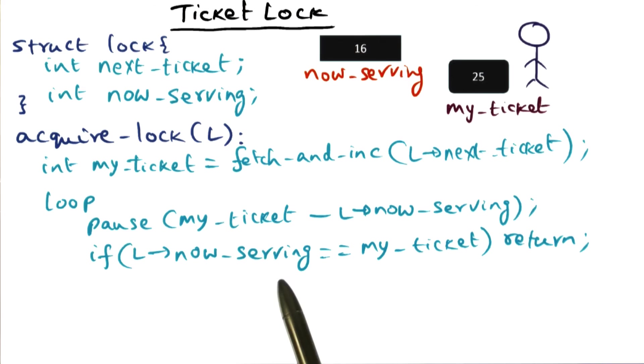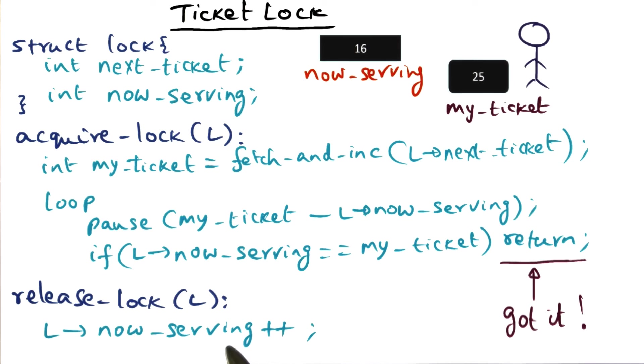That is going to be done by the current holder of the lock. He's going to come and release the lock. And when he releases the lock, he's going to increment the now serving value in the lock data structure. And that's how eventually the now serving will advance to be equal to my ticket and I'll get the ticket, and then I can return from the acquired lock.